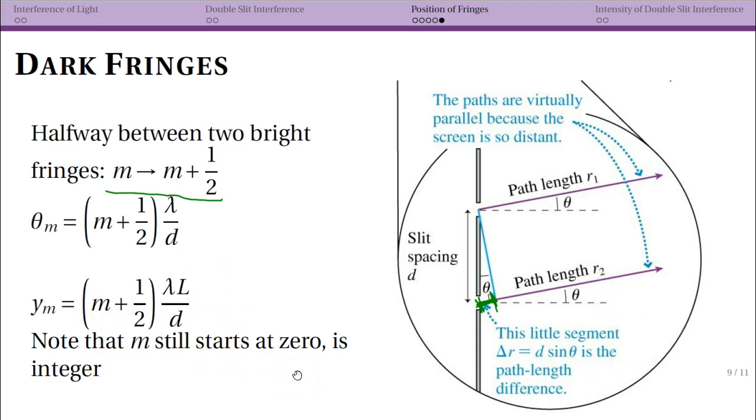The fact that it starts at 0 can be a little confusing because the first thing that you see at theta equals 0 is actually a bright spot. So m equals 0 when you use this equation corresponds to the first dark spot you see. Keep in mind when you're counting that this is actually m equals 0, which makes a little more sense when you're on the bright spot. Your first dark spot corresponds to m equals 0.